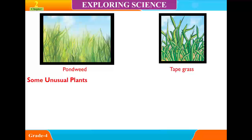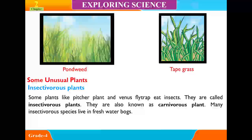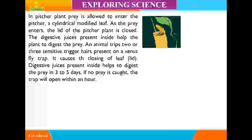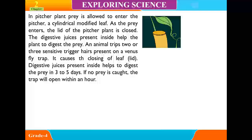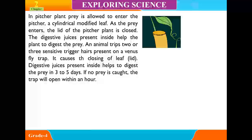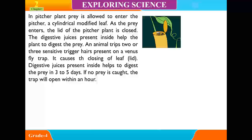Some Unusual Plants. Insectivorous Plants. Some plants like pitcher plant and Venus flytrap eat insects. They are called insectivorous plants, also known as carnivorous plants. Many insectivorous species live in freshwater bogs. In the pitcher plant, prey is allowed to enter the pitcher, a cylindrical modified leaf. As the prey enters, the leaf of the pitcher plant closes. The digestive juices present inside help the plant digest the prey. If no prey is caught, the trap will open within an hour.